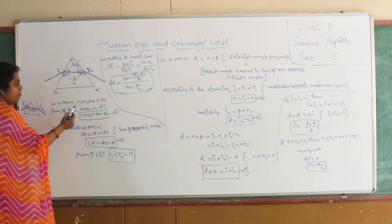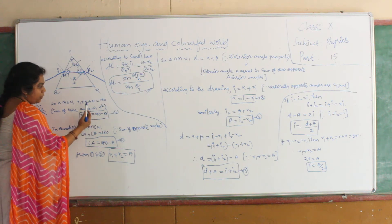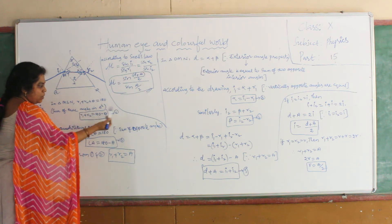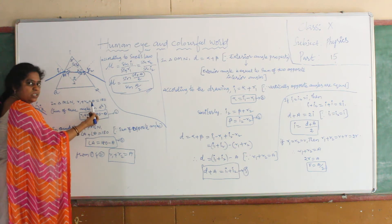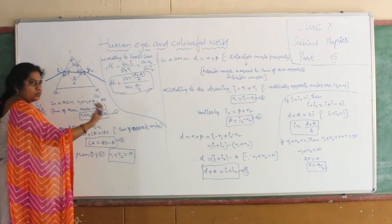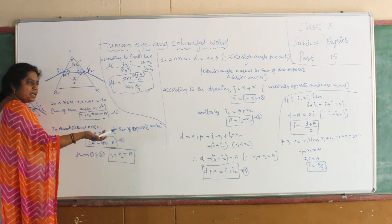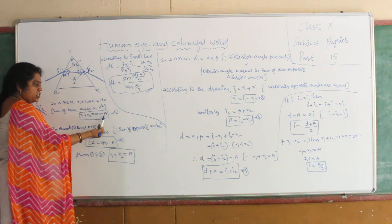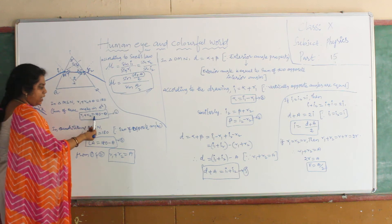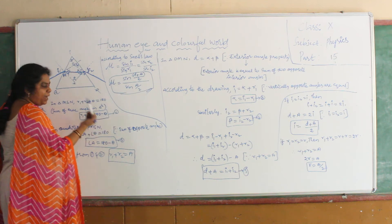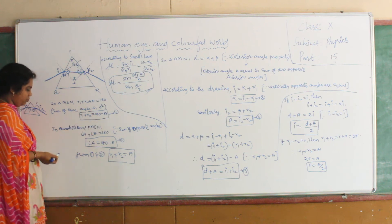From this equation, transferring theta to the other side gives R1 plus R2 equal to 180 minus theta. This is equation 1.